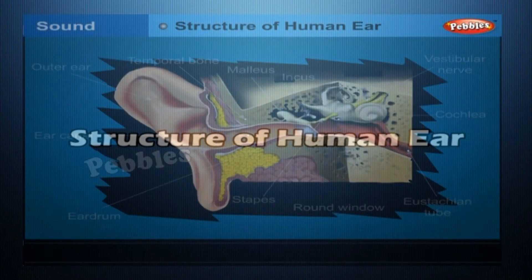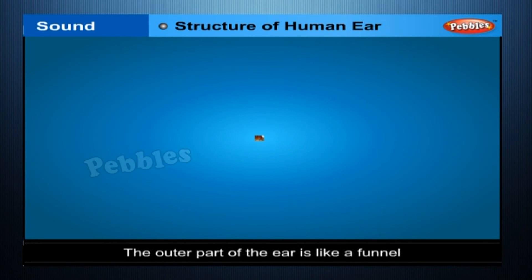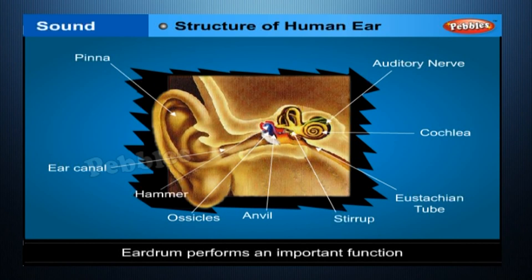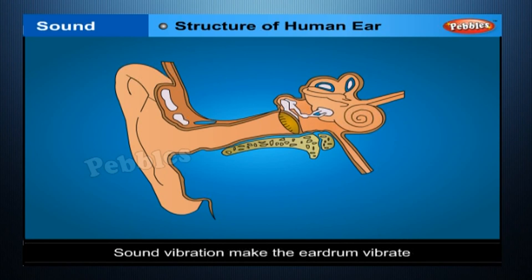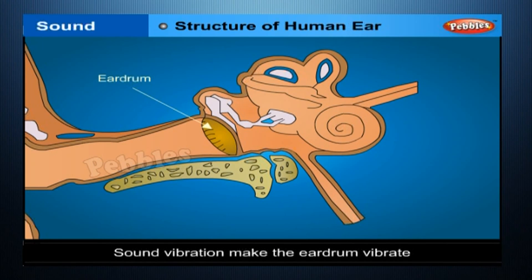Structure of the Human Ear. We hear sound through our ears. The shape of the outer part of the ear is like a funnel. When sound enters it, it travels down a canal, at the end of which a thin membrane is stretched tightly. It is called the eardrum. The eardrum is like a stretched rubber sheet. Sound vibrations make the eardrum vibrate. The eardrum sends vibrations to the inner ear. From there, the signal goes to the brain. That is how we hear.